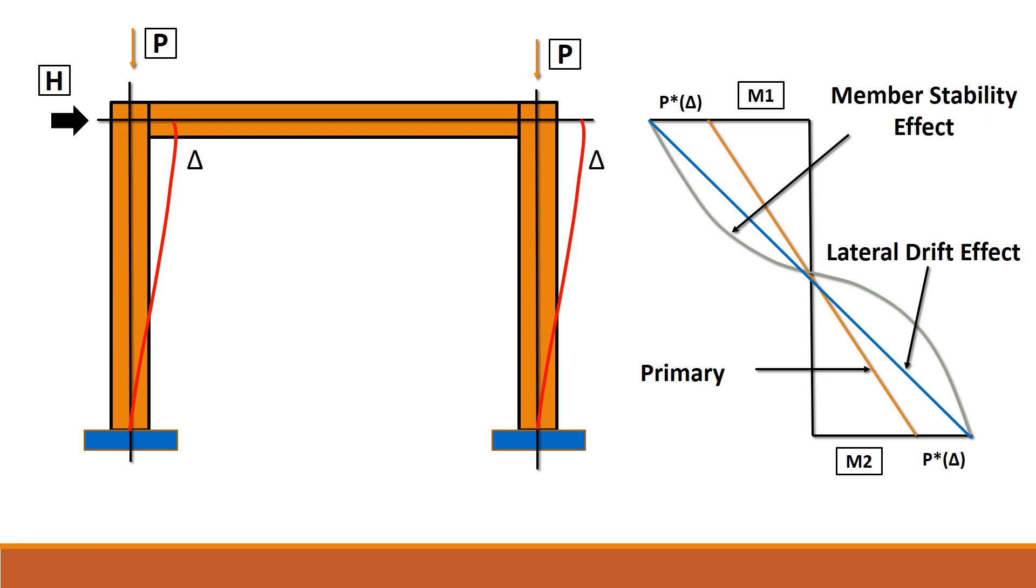So, overall, due to lateral loads H, the moments in the section are M1 or M2 plus P delta, which is due to the drift. And third, the secondary component of the moment due to the member stability or the instability along the length of the column.